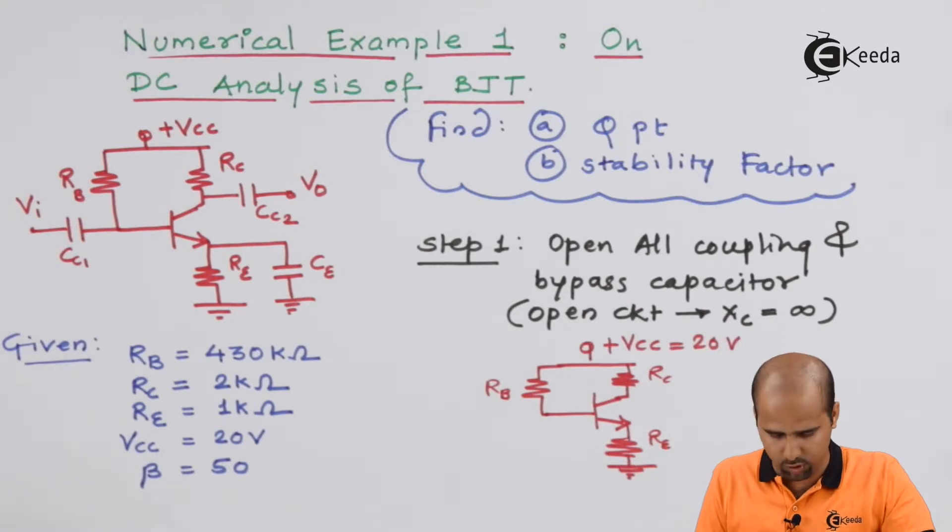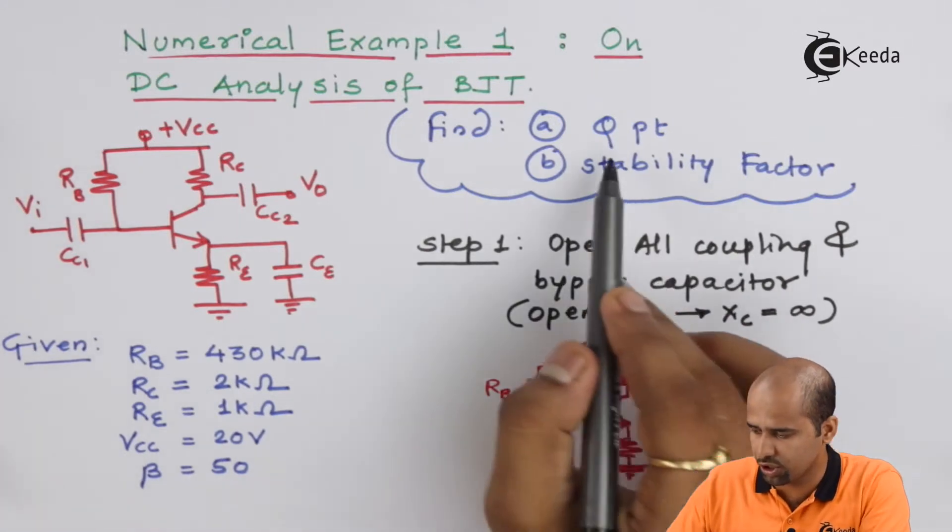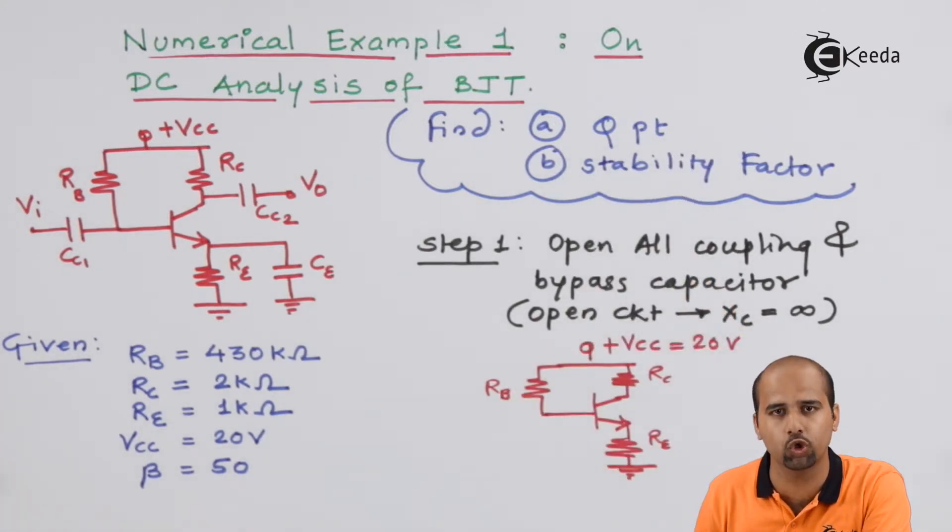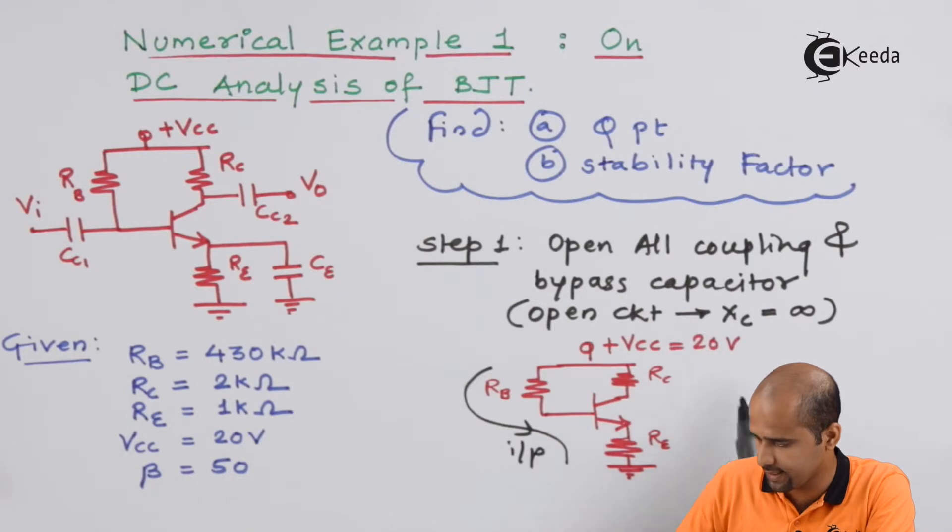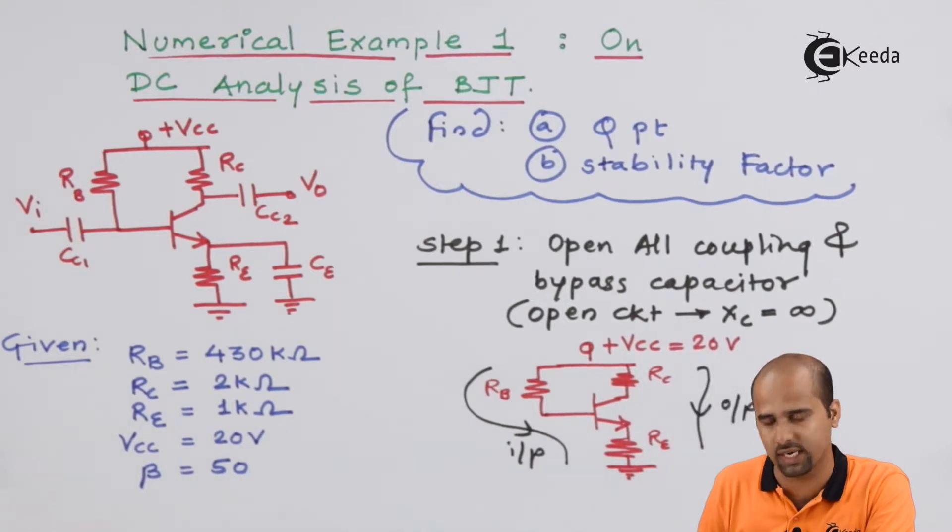Let's start with the step number 2 that is to find out the Q point for which we have to follow two steps. One is this one that is input KVL and second one is this one that is output KVL. Let's start with that.